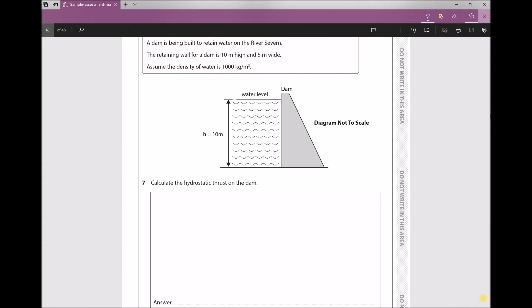Question 7 gives the following scenario: a dam is being built to retain water on the River Severn. The retaining wall for a dam is 10 meters high and 5 meters wide. Assume the density of water is 1000 kg/m³. It gives the height of water as 10 meters on the diagram and asks us to calculate the hydrostatic thrust on the dam.